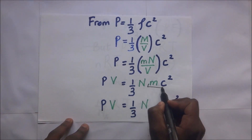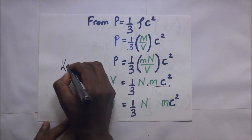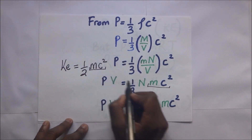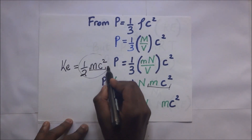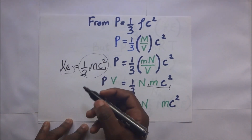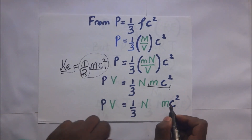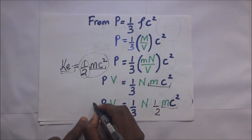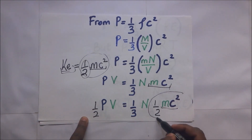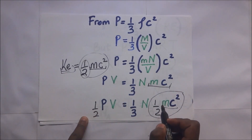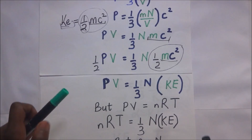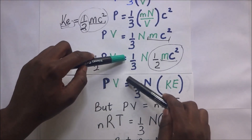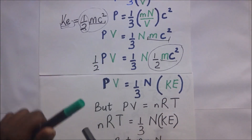This mC squared resembles the kinetic energy expression. We know kinetic energy is one-half times mass times velocity squared, and here we only have mC squared. So to make this expression look like kinetic energy of the particles, we multiply one-half on both sides. In our next expression, we include a one-half there and a one-half here, so that we are able to get the expression for kinetic energy. Where there is one-half mC squared, we put kinetic energy.